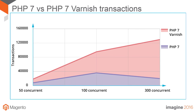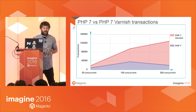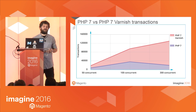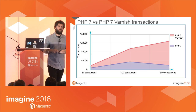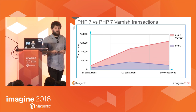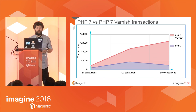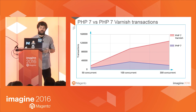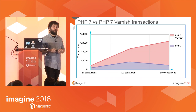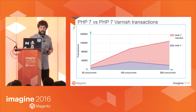Moving to total transactions with PHP 7: with 300 concurrent users, the transactions handled were almost five times higher with Varnish. With 100 concurrent users, the transactions handled were almost 1.5 times higher, and with 50 concurrent users, likewise about 1.5 times higher.